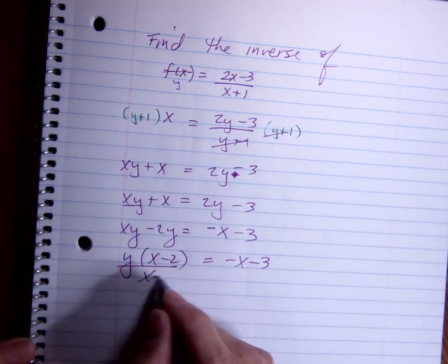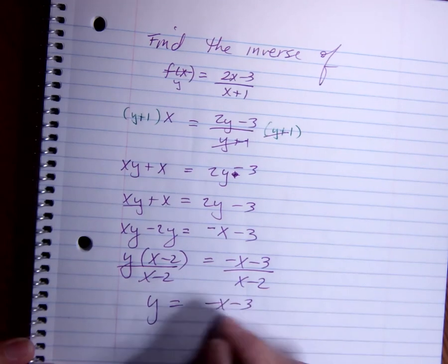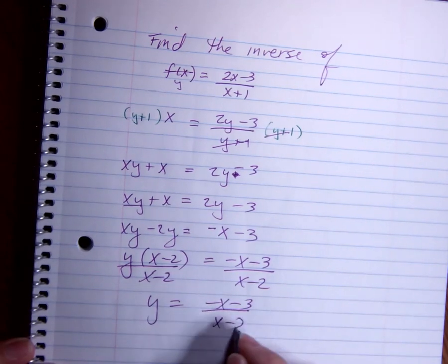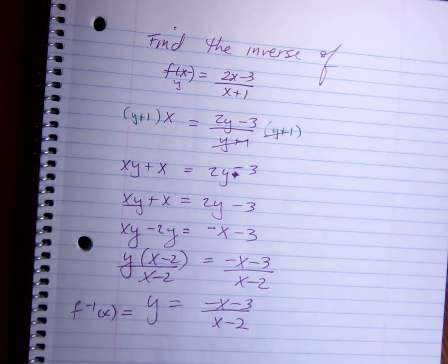The last step is to divide by x-2. So y = (-x-3)/(x-2). This is my inverse.